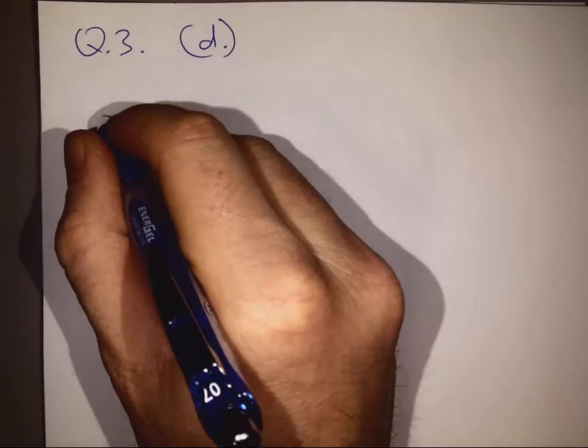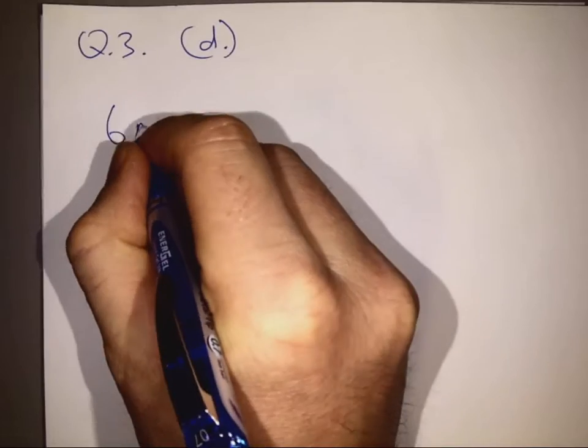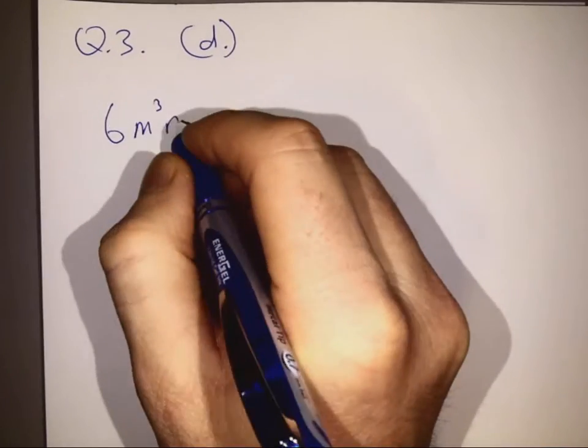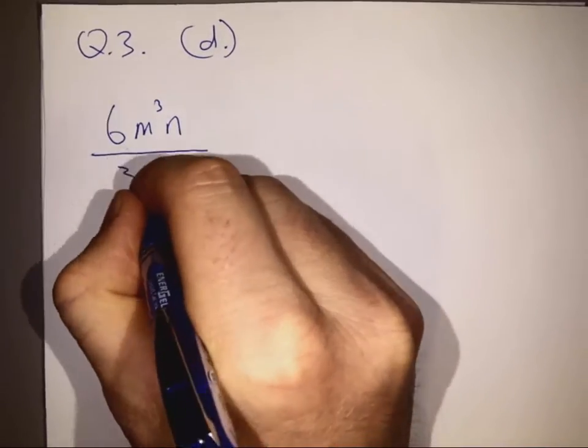Question 3, Part D. We have 6m cubed times n divided by 3mn. So I'm just going to write it like this to make it easier to deal with.